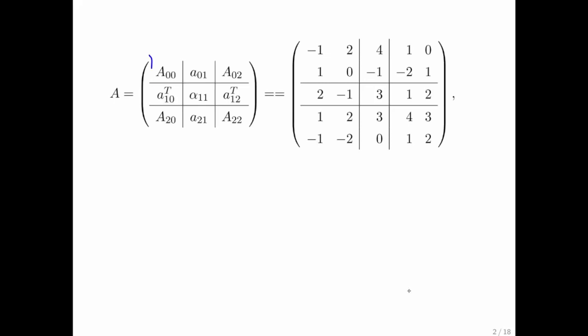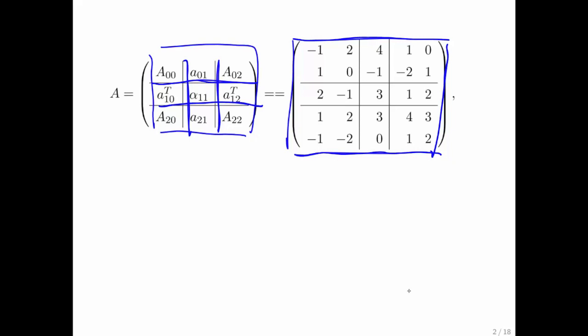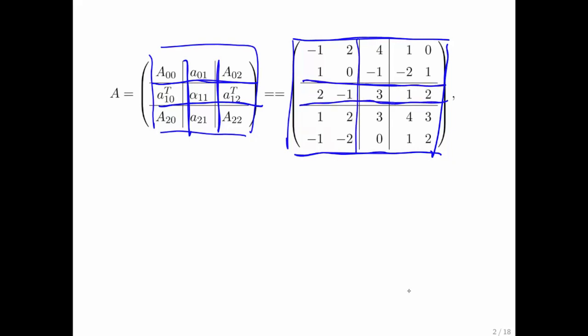What do we have here? We have a three by three partitioning of our matrix. On the right we have a concrete example, and these lines here tell us how the matrix on the right is partitioned. Of course this is just an example. A00 is a submatrix, and notice that it's a two by two matrix, and notice that we use an uppercase letter because it's a matrix.